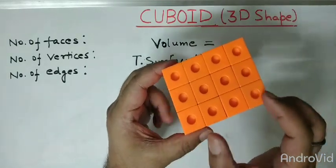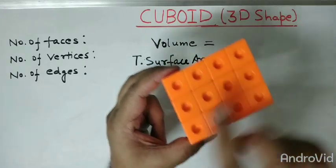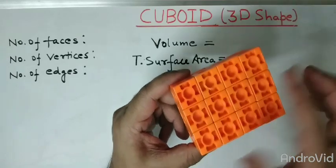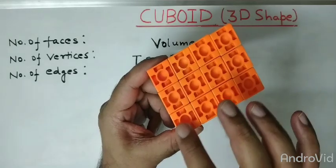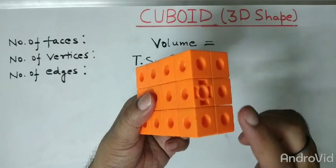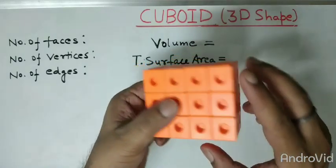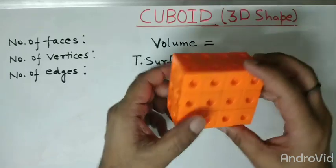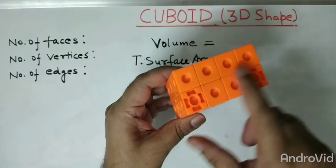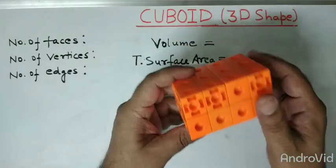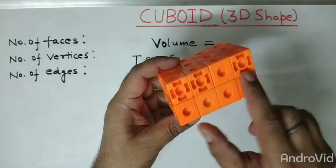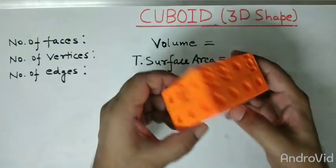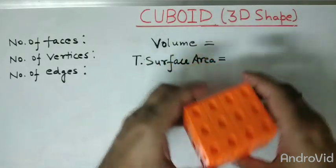Let us first check about the faces. This one is the first face — the upper part. This is the bottom part, the second face. This one is the third face, this one is the fourth face, this was the fifth face, and here this is the sixth face. So in total we are having six faces in a cuboid.